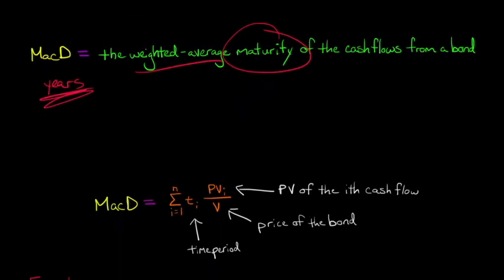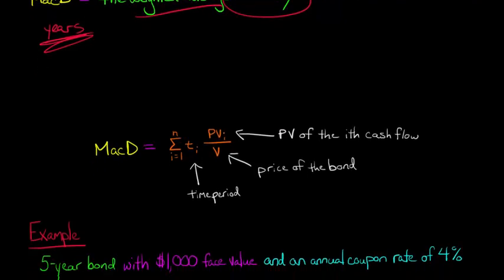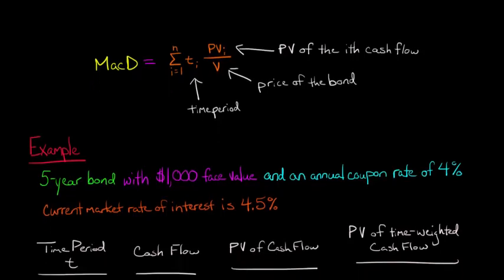So the way we calculate Macaulay Duration, I've actually provided a formula here for the mathematically inclined. Basically, in the numerator, we're going to have the sum of the present value of the time-weighted cash flows. And then we're going to divide that by the price of the bond. And the price of the bond is just the present value of the cash flows, the interest payments, and the face value of the bond. So you might be saying, we're actually dividing the present value of the cash flows by the present value of the cash flows? Well, it's important to know, in the numerator, we're talking about the time-weighted present value of the cash flows. Let's walk through an example, and it'll become a little bit easier.